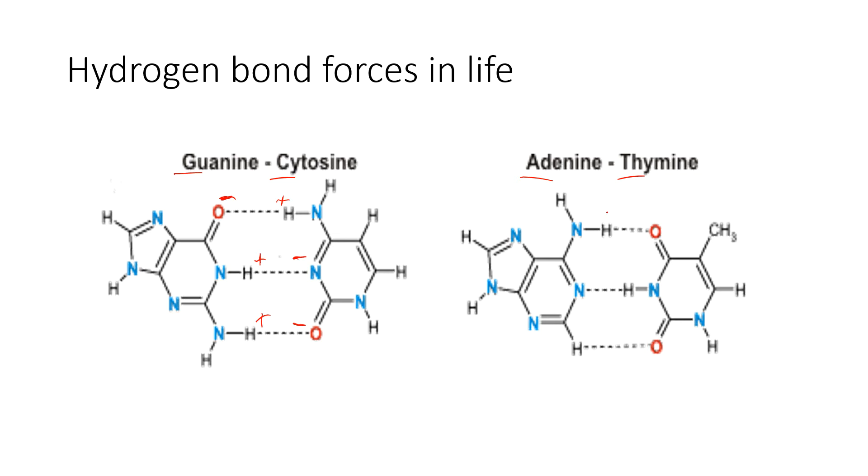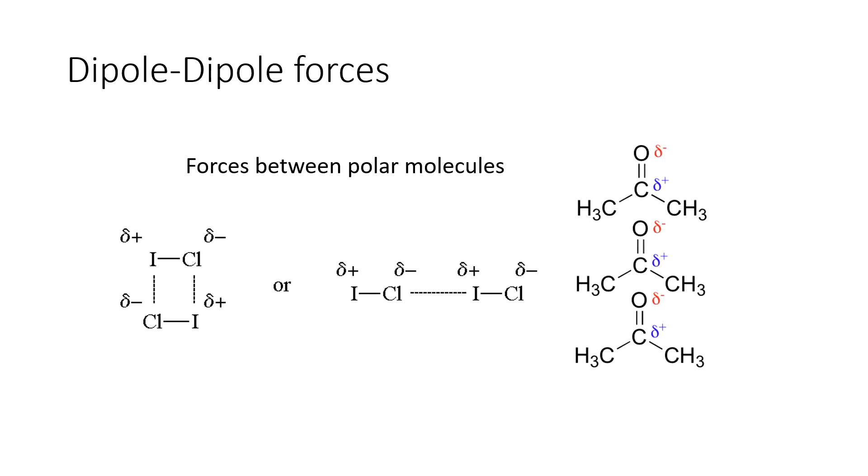So this alternating charge that thymine is looking for isn't available here because both of these have two charges that are the same. So the only place thymine is going to get its alternating charge is adenine. The way adenine is going to get its alternating charge is bonding to thymine. And that's why that happens. All right, so dipole-dipole is similar to what we're just talking about.